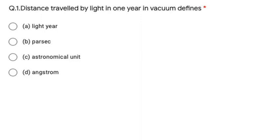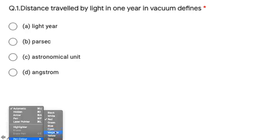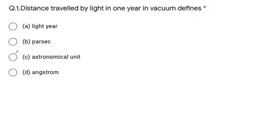The first question is: the distance travelled by light in one year in vacuum is known as what? The correct option for this question is light year, because light year is a unit of distance — the distance that light takes to travel in one year is known as one light year.